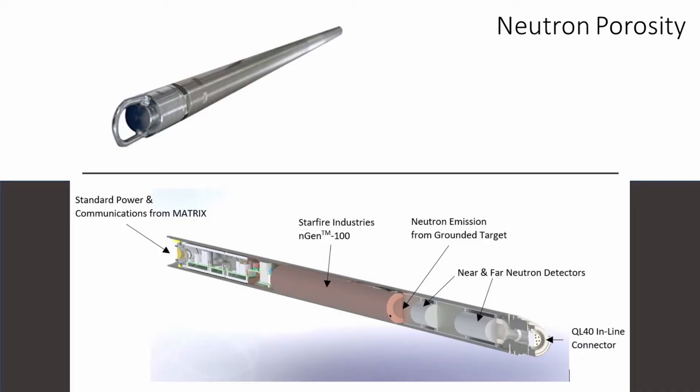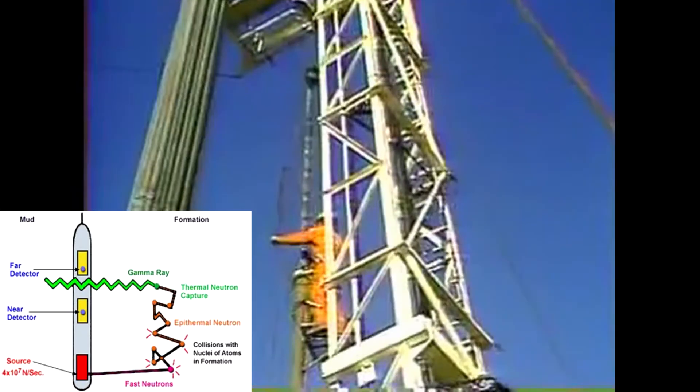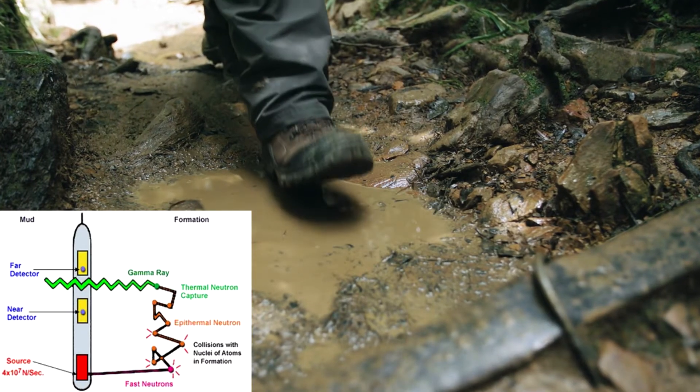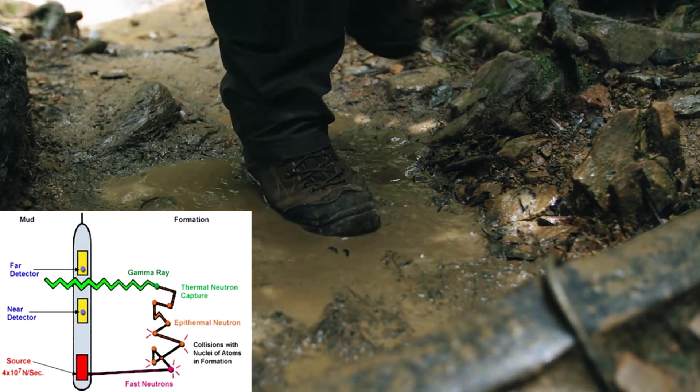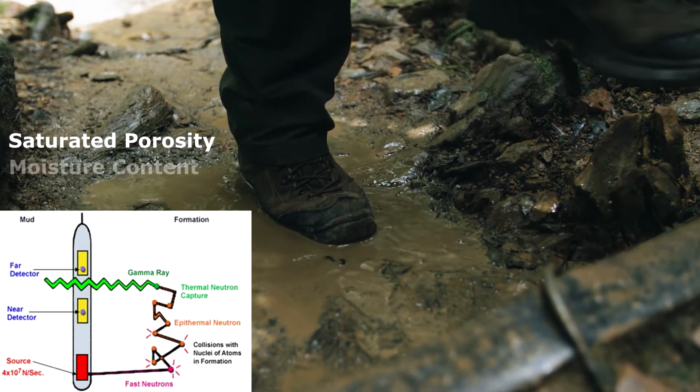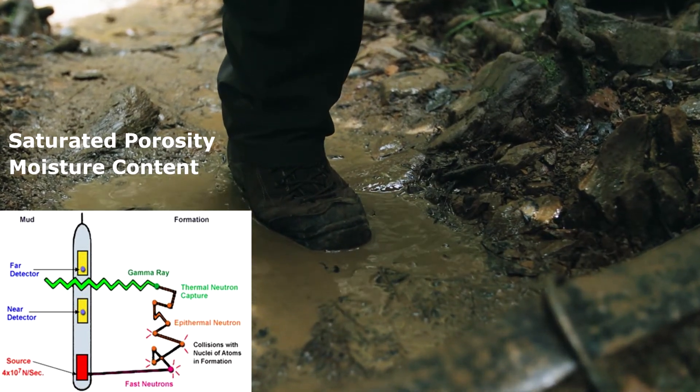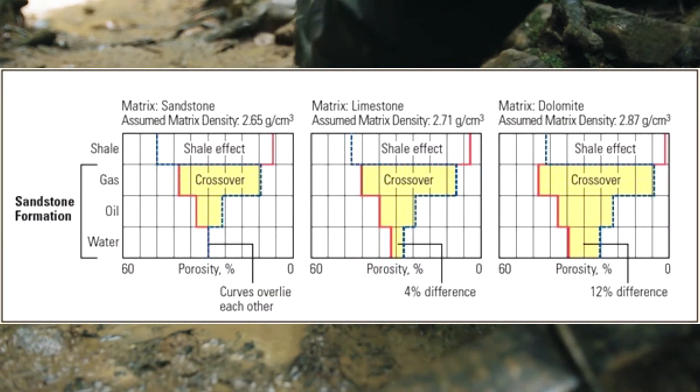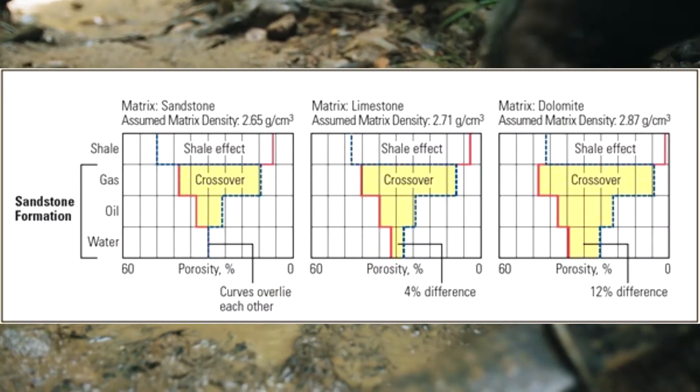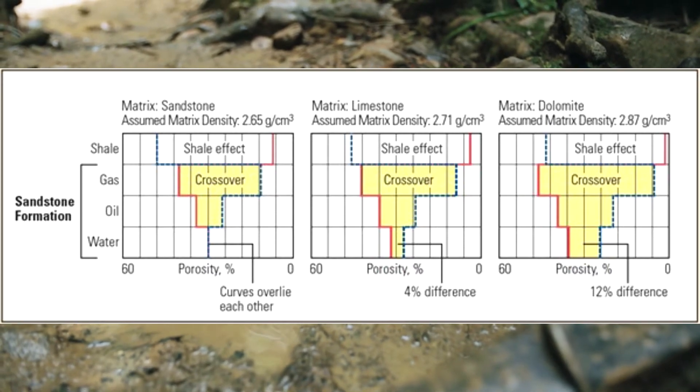A neutron porosity logging tool emits high-energy neutrons into the formation and measures the time it takes for them to slow down into an energy state more consistent with the formation. These methods are most reactive with the high concentrations of hydrogen atoms found in water and hydrocarbons within the formation. Therefore, it is best used to measure characteristics such as saturated porosity and moisture content, which can also help identify lithology. Like density logs, a matrix of either sandstone, limestone, or dolomite must be defined within the instrument before measuring or compensated for afterwards.